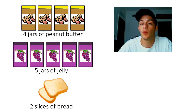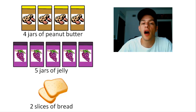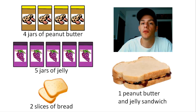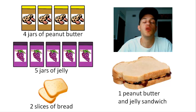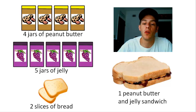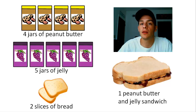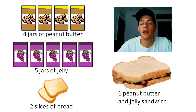So the question then would be how many peanut butter and jelly sandwiches could I make? The obvious answer is I can only make one, because I only have two slices of bread. Even though I have more than enough peanut butter and more than enough jelly to make numerous sandwiches, because I have such a small amount of bread, I can only make a small amount. So the bread is basically limiting how many sandwiches I can make.